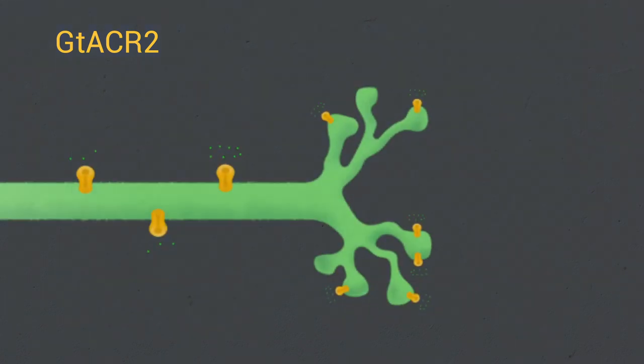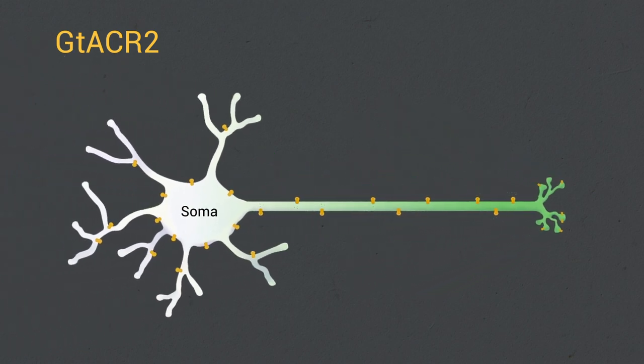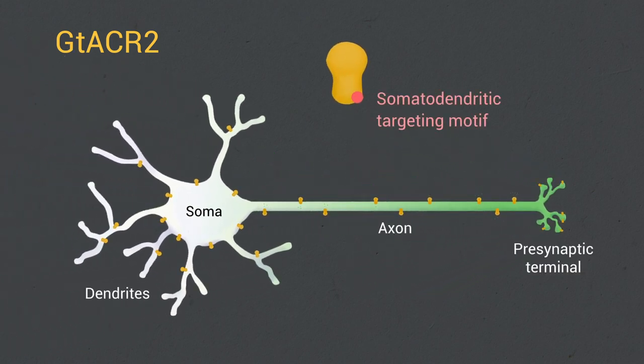To reduce the excitatory effect of GT-ACR2, we created a hybrid motif that is most effective in concentrating GT-ACR2 in the somatodendritic domain.